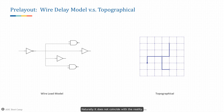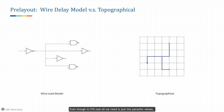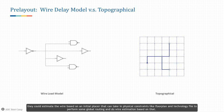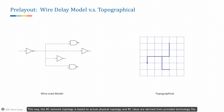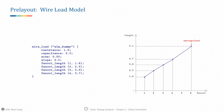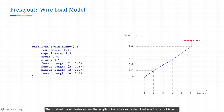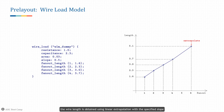Naturally, this does not coincide with reality. To further correlate with the physical implementation, the industry also tries to bring some place-and-route features into delay estimation. Even though in the STA tool all we need is just the parasitic values, some implementation tools can estimate the wire based on an initial placement or use physical constraints like floor plan and technology file to perform global routing and do wire estimation. This way the RC network topology is based on actual physical topology and RC values are derived from the provided technology file.